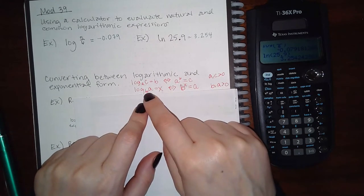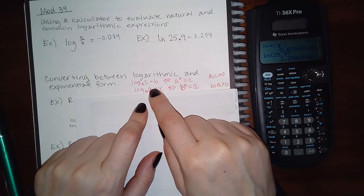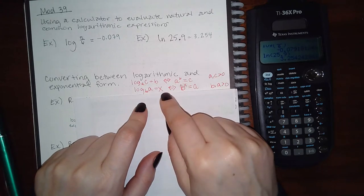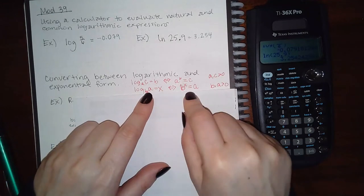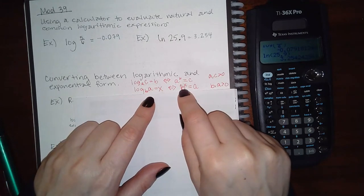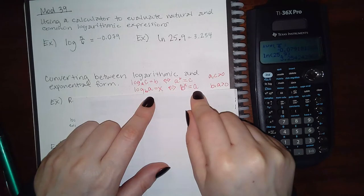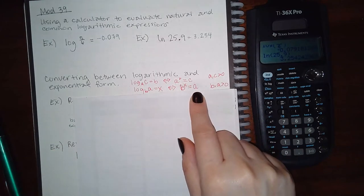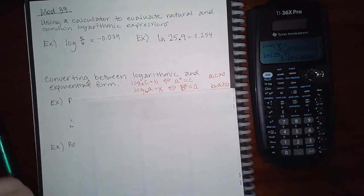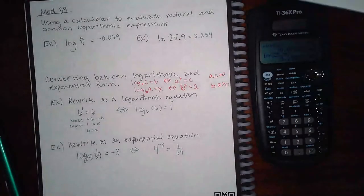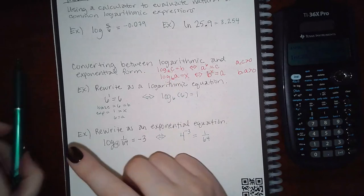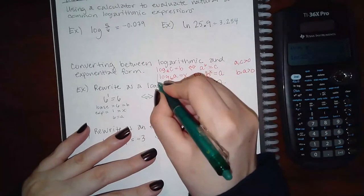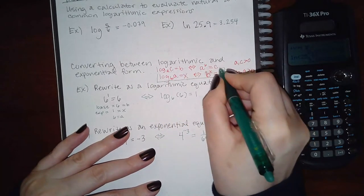I like to use b for base, a for argument, and x for exponent, because they make a little more sense to me. So when I convert it over: b is my base, x is my exponent, and a is the answer. It just helps me when converting things. I'll also show you another way — I use the one at the bottom to identify my base, my argument, and my exponent.